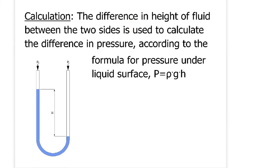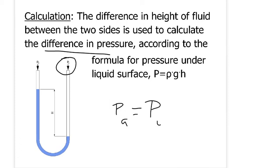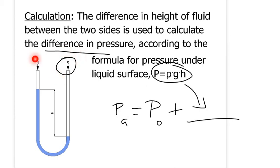The difference in height of the fluid between the two sides is used to calculate — you use this formula right there. This gives the pressure difference. So whichever side has more pressure — in this case, that's labeled P-A — pressure A is going to equal pressure O plus the result of that. Because the pressure of this side is equal to the pressure that's acting over here plus the difference between the two of them, which is the liquid there.